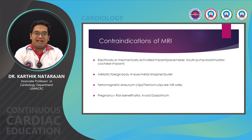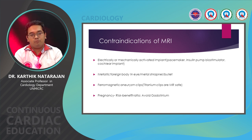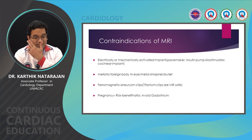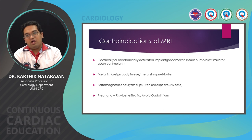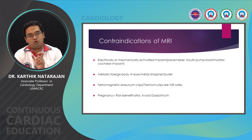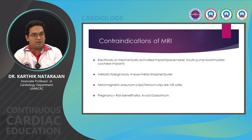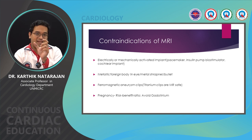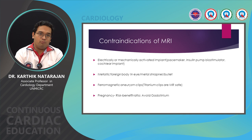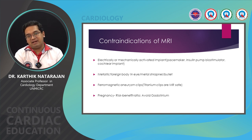Contraindications of MRI include electrically or mechanically activated implants such as pacemakers, insulin pumps, biostimulators, and cochlear implants. For MRI-compatible pacemakers, you need to know the specific absorption rate — it may be 1.5 or 2 watts per kg depending on the pacemaker — and it must not exceed that value. Other contraindications include metallic foreign bodies in the eye, metal shrapnel or bullets, and ferromagnetic aneurysmal clips. Titanium clips are MR-safe. In pregnancy, you need to carefully weigh the risk-benefit ratio and clearly document the indication, avoiding gadolinium enhancement where possible.